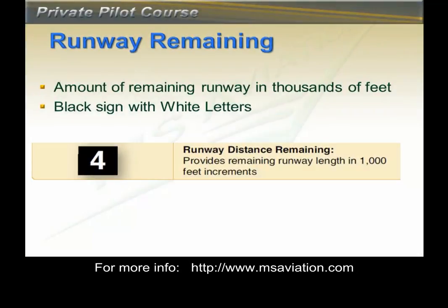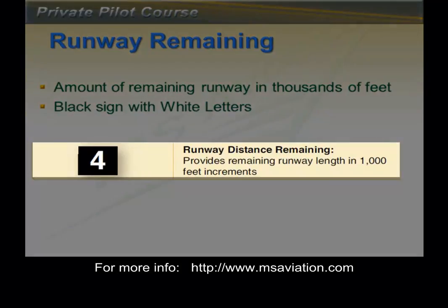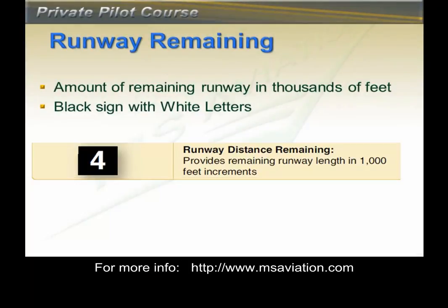Runway remaining signs are installed on the left side of the runway to indicate how much runway in thousands of feet is left. In this example, there are 4,000 feet remaining. Not all airports have these signs — they are usually at airports with longer runways and operations that allow aircraft to depart from different locations. For example, a 747 might need all of the runway, while a smaller aircraft may depart at a point other than the end. As you pull onto the runway, this sign helps you double-check that you have enough runway ahead.